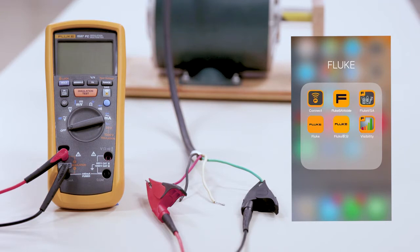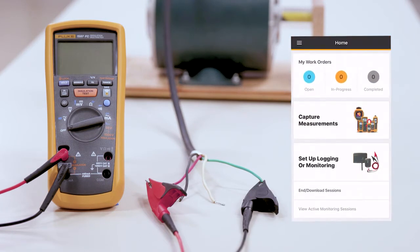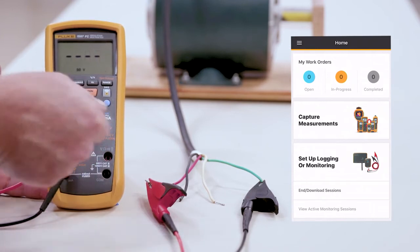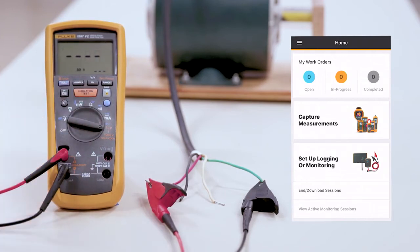As you can see, I've already downloaded the app and I'm going to go ahead and get into the Fluke Connect app. At this point here, we want to turn the meter on all the way over to the far right in the orange for our insulation test.